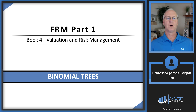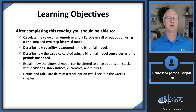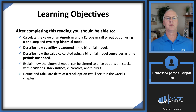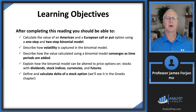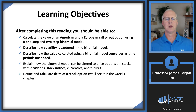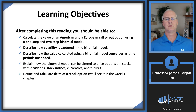This is FRM Part 1, Book 4, Valuation and Risk Management, and the chapter on binomial trees, which could be called how binomial trees will help us compute the value of a call option. Looking at the learning objectives, the first one is really important: we're going to use either the one or the two-step binomial model to compute the value of an American or European option. One of the inputs is volatility, and we'll also cover dividends, options on futures contracts, and delta.